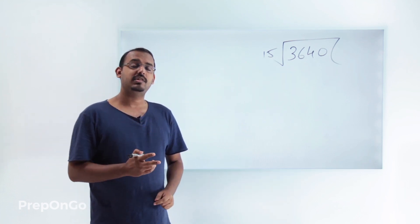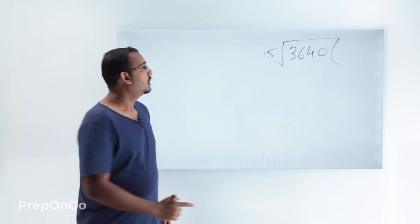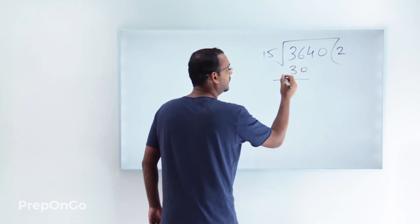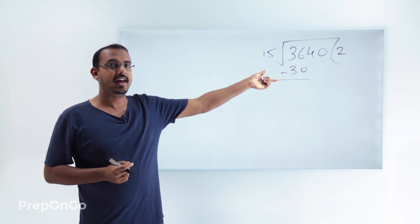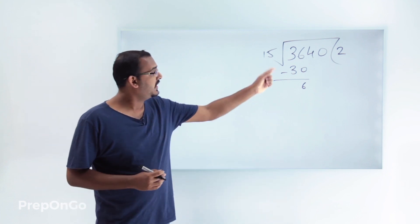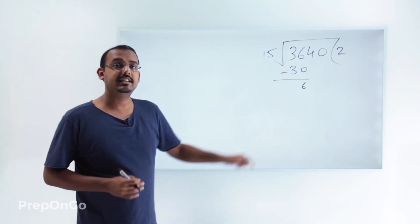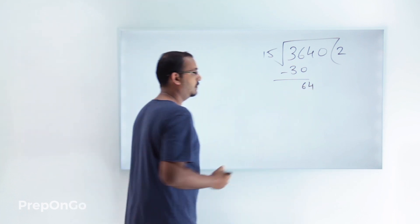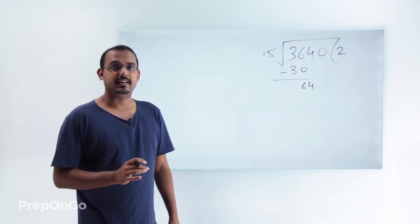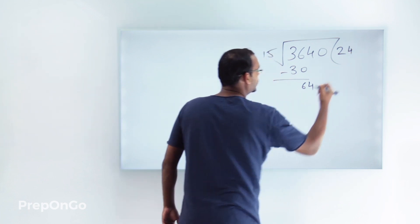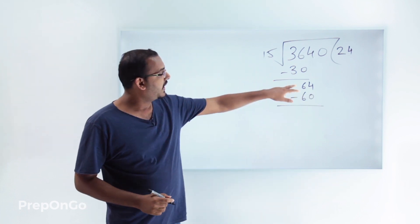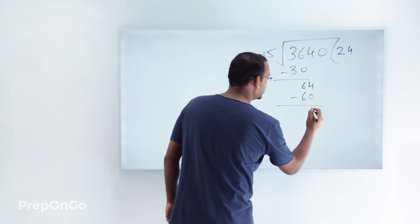15 goes 2 times into 36 to give the number 30. When we subtract these two values we get the remainder, which is 6. Now again 15 does not go into 6, so we'll bring down the next digit from the dividend to make this number 64. 15 goes into 64 four times to give the number 60, so we write 4 in the quotient and multiply 15 times 4 to get 60. When we subtract 60 from 64 we get the remainder as 4.